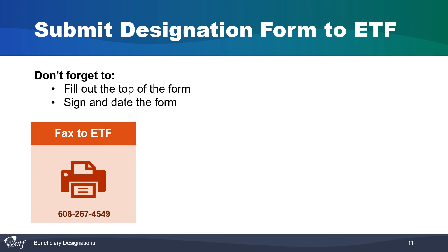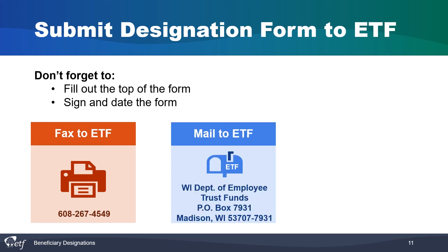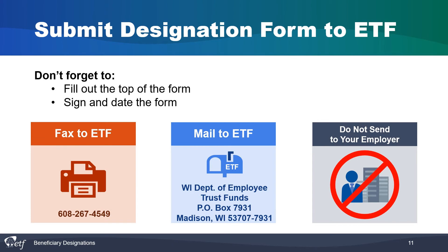You have two ways to submit a form to ETF. First, you can fax the form to ETF by dialing 608-267-4549, or send the form by mail to the Wisconsin Department of Employee Trust Funds at P.O. Box 7931, Madison, Wisconsin 53707-7931. Do not send the form to your employer — you must submit it directly to ETF.